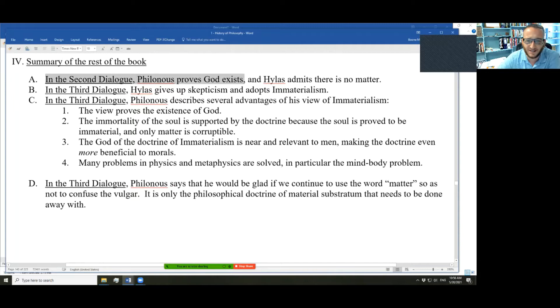So, this is in the middle of a section on Berkeley in some of my other notes. And here is what happens in the second dialogue. Philonous proves God exists. Hylas, who started off presuming that common sense requires us to acknowledge the existence of mind-independent matter, Hylas has been enlightened. He gives up belief in matter. He says there is no matter. And in the third dialogue, he gives up his skepticism and adopts immaterialism.